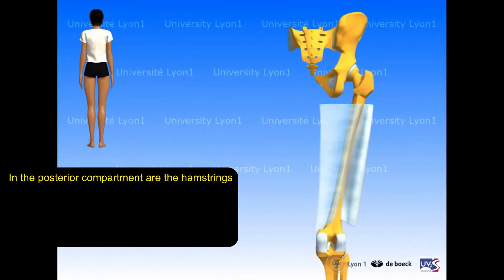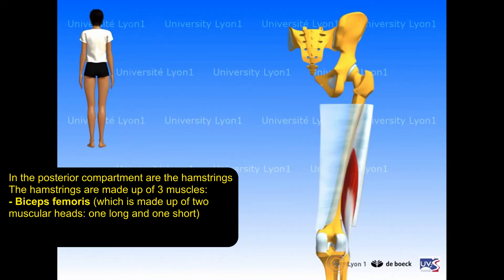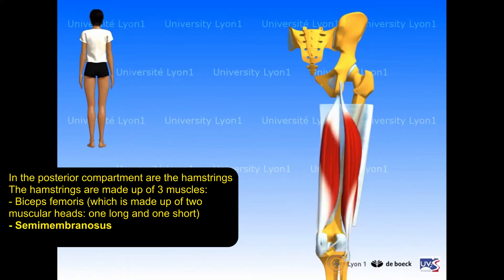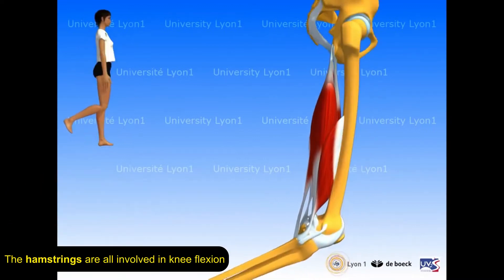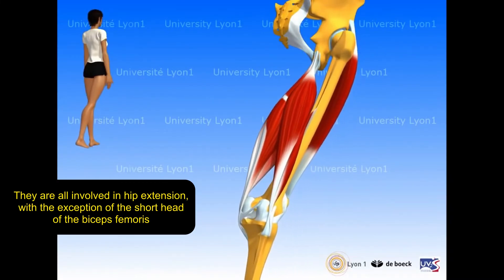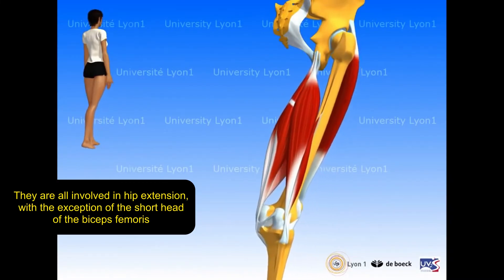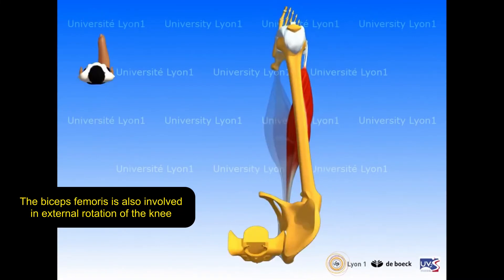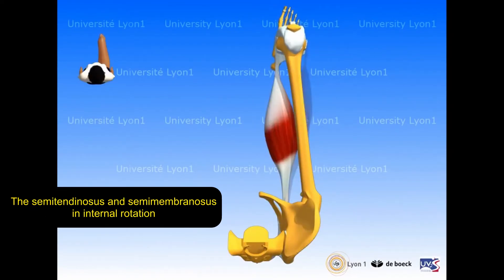In the posterior compartment are the hamstrings, made up of three muscles. The biceps femoris, which has two muscular heads — one long and one short. The semimembranosus and the semitendinosus. The hamstrings are all involved in knee flexion and hip extension, with the exception of the short head of the biceps femoris. The biceps femoris is also involved in external rotation of the knee, and the semitendinosus and semimembranosus in internal rotation.